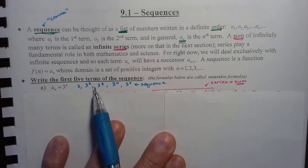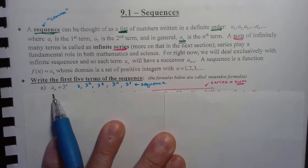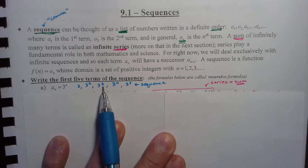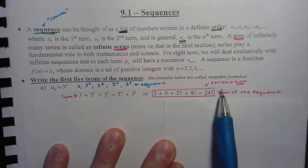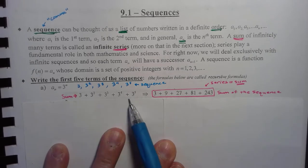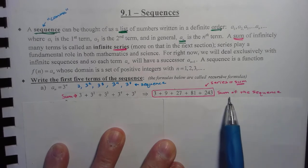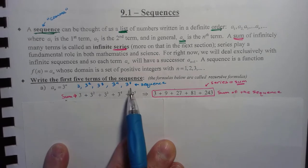Write the first five terms of the sequence. Remember, a sequence is a list of numbers separated by commas. So A sub n equals 3 to the nth: 3 to the first is 3, 3 to the second, 3 to the third, 3 to the fourth, 3 to the fifth. A series is a sum, so this is the sum of the sequence. The sequence itself is the list of terms.